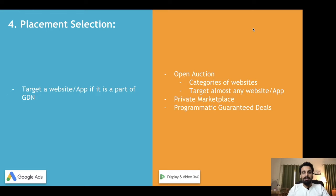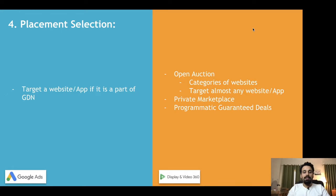The second type of media buy in DV360 is the Private Marketplace. Websites like BBC or Khalij Times allow only a select few advertisers to buy certain inventory. If you want to be among those advertisers, you need to approach these websites and ask them to provide you a PMP deal, where you compete with just a few advertisers to buy that inventory.